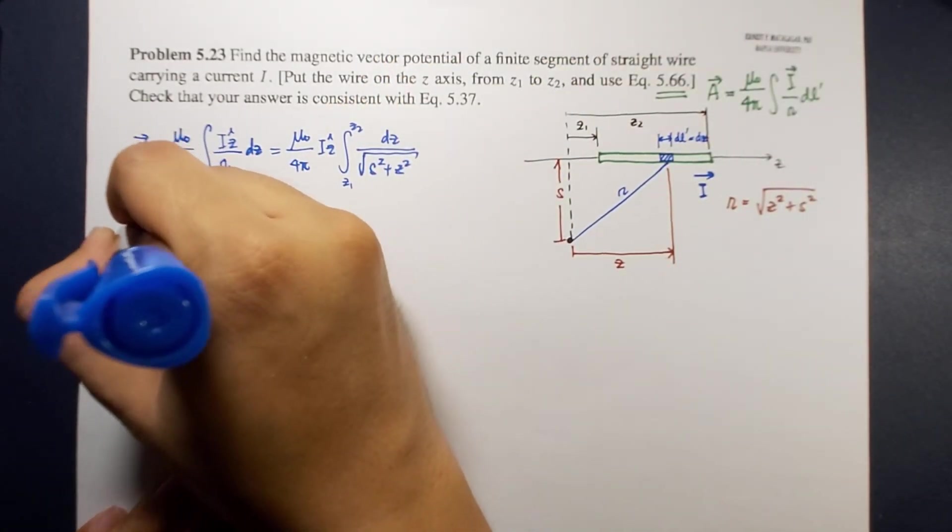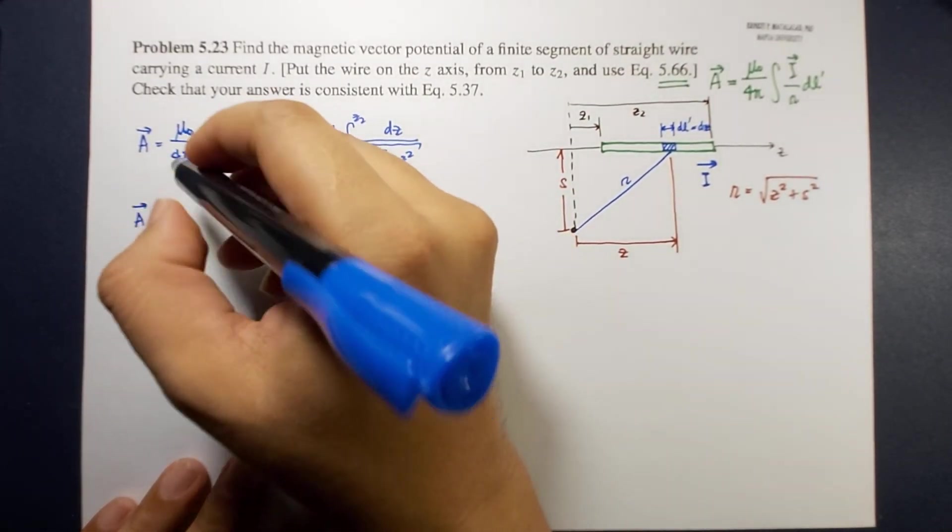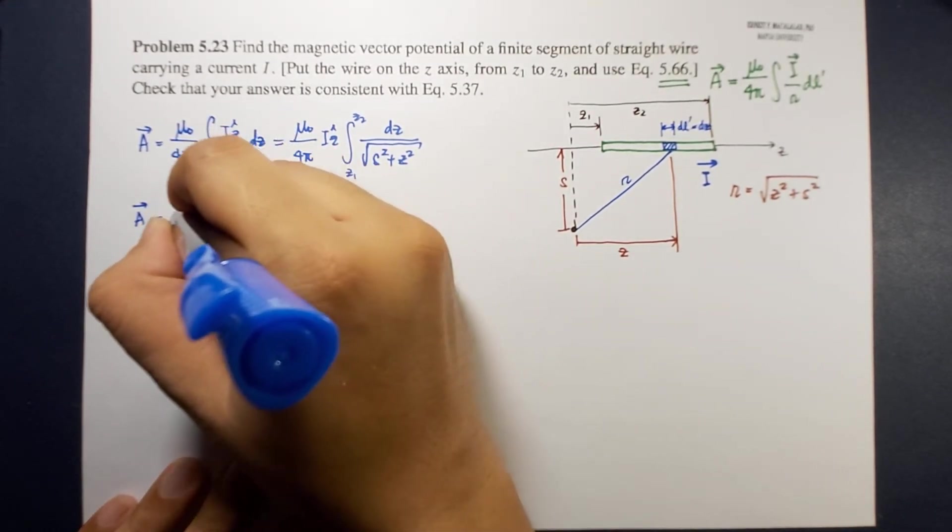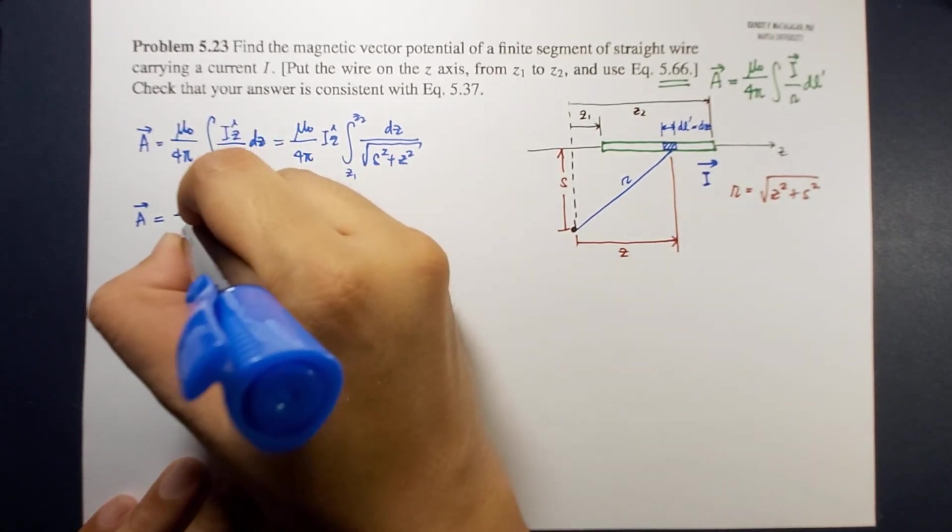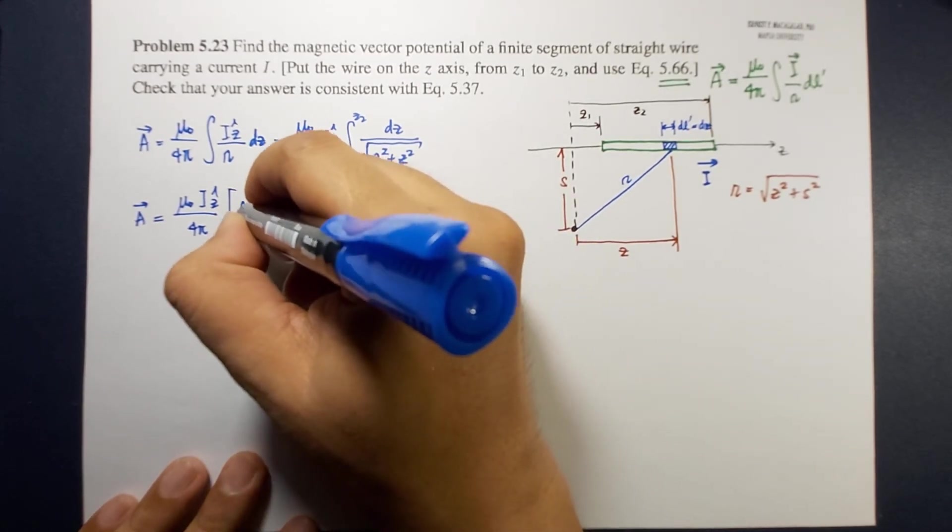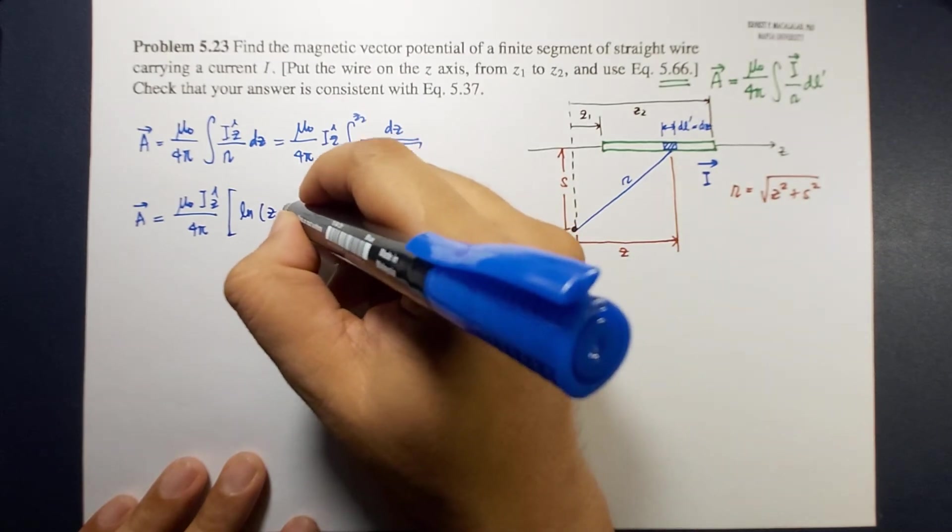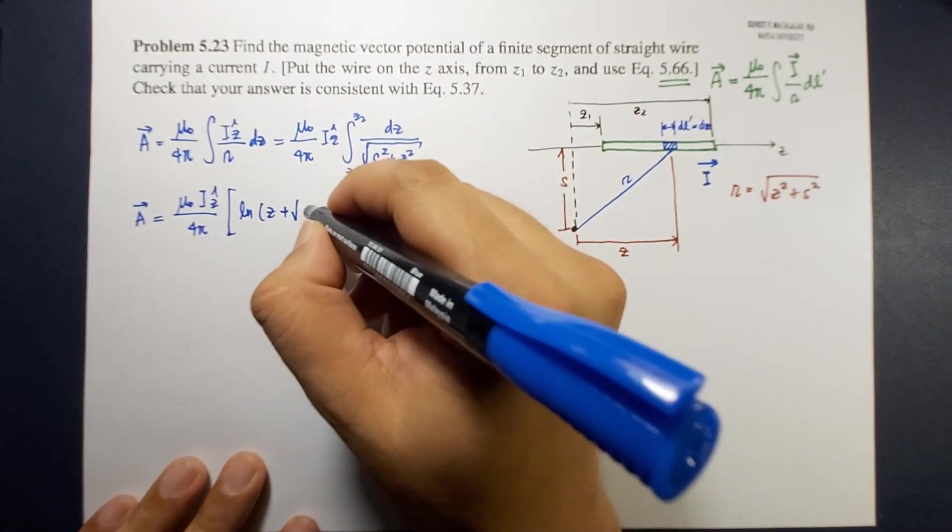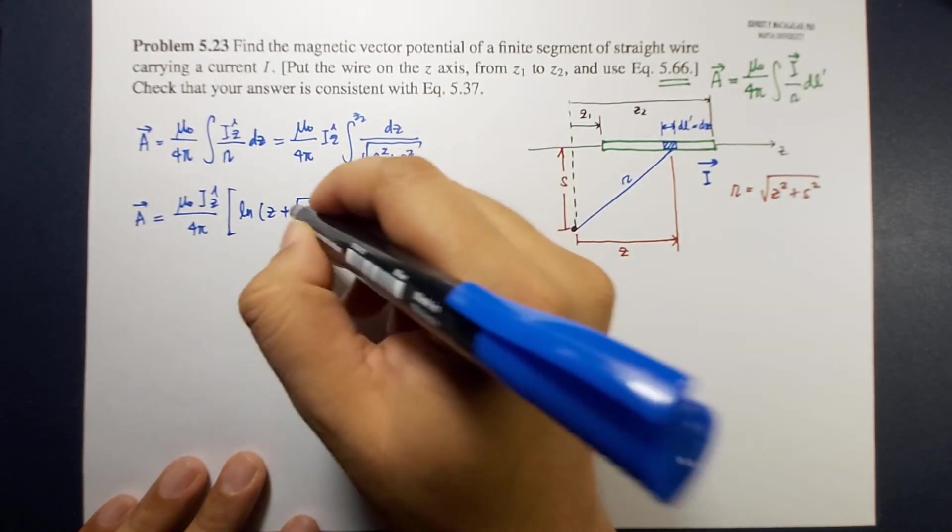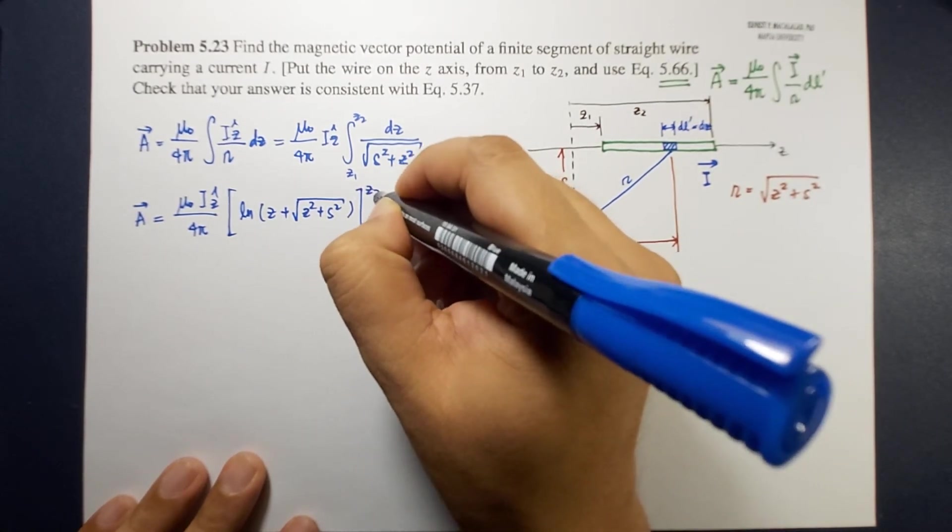So therefore evaluating this we have mu naught i z hat divided by 4 pi times the natural logarithm of z plus square root of z squared plus s squared, this is the integral of this. Then let's evaluate it from z1 to z2.